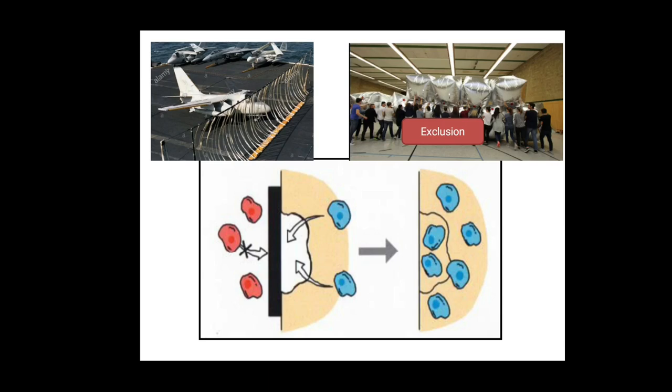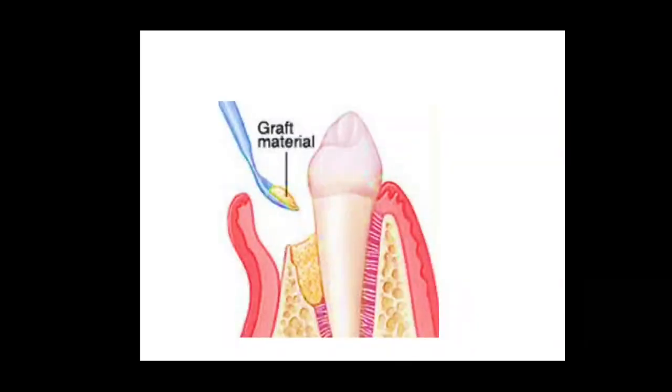Now coming to the clinical scenario. In the surgery, after debriding the area and removing granulation tissues, bone grafts may be used and root biomodification may be done. And over that, barriers, that is membranes, can be used to exclude the undesirable cells.